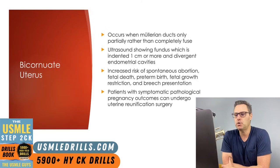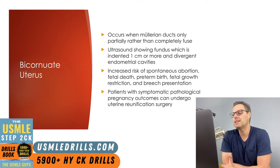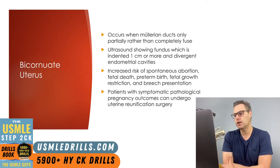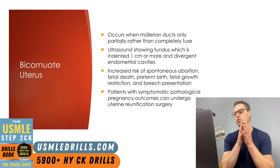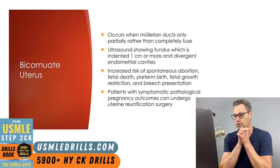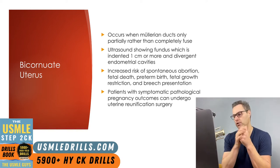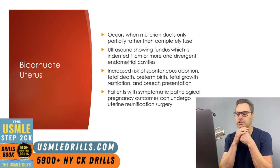The bicornate uterus forms as a result of failure of the Müllerian ducts to completely fuse — only a partial fusion occurs. On ultrasound, if the uterine fundus is indented one centimeter or more, that is consistent with a bicornate uterus. There are not two separate uterine cavities as seen in the septate uterus, but rather one divergent endometrial cavity.